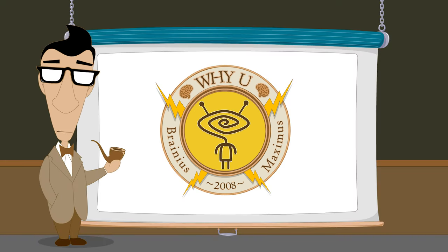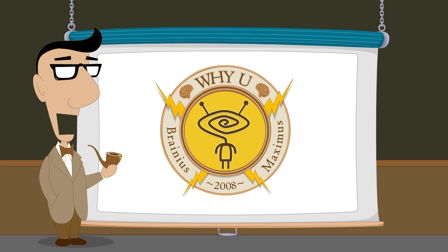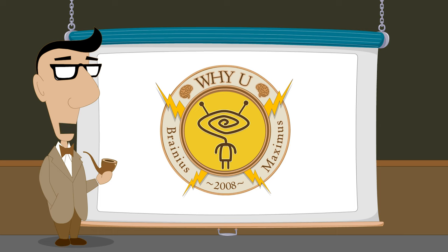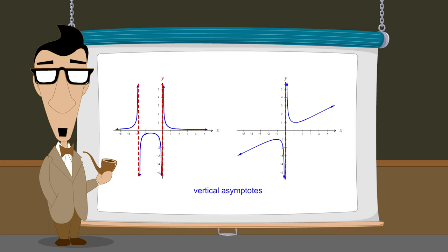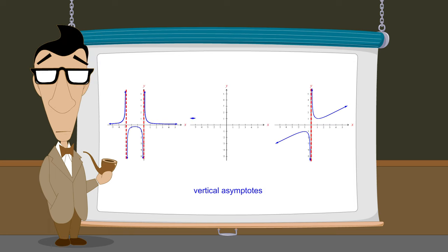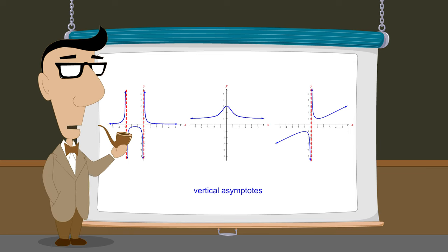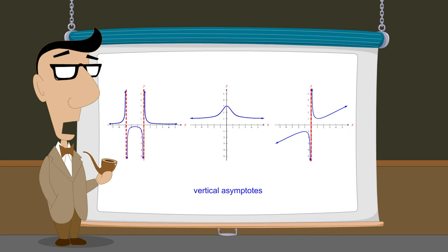Hello, I'm Professor Von Schmohawk and welcome to Why U. In the previous lecture, we saw that although rational functions may have any number of vertical asymptotes or no vertical asymptotes, rational functions will always have exactly one non-vertical asymptote.